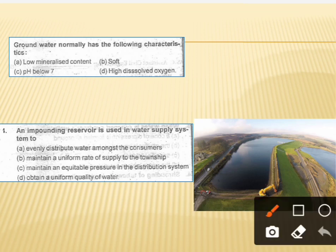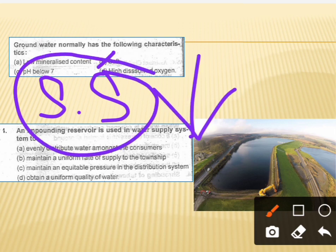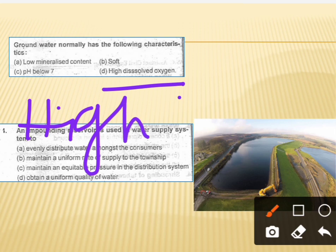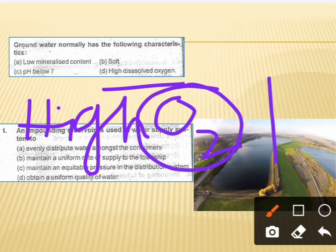The next question says that groundwater normally has which of the following characteristics. The correct answer is option B, which is soft. Groundwater, compared to surface water, has fewer suspended solids and lower dissolved oxygen than surface water.